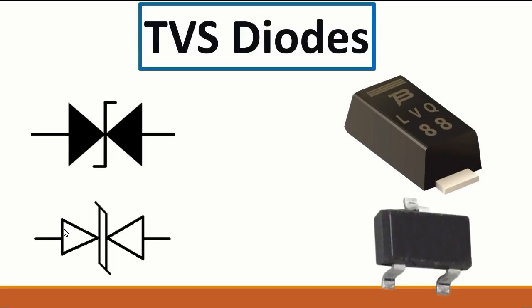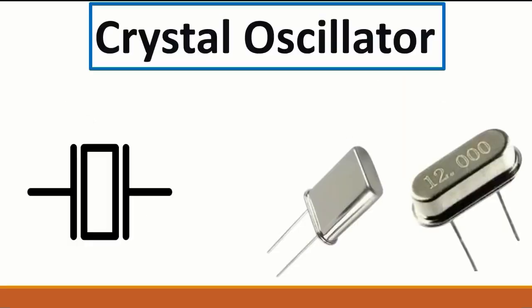We also have the TVS diode. You can find this type of diode on motherboards — the symbol shows two diodes connected at their cathodes.